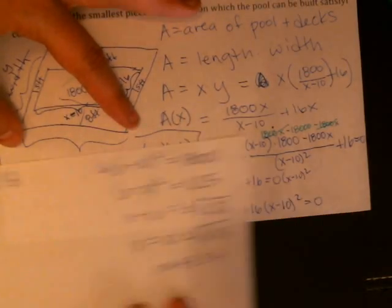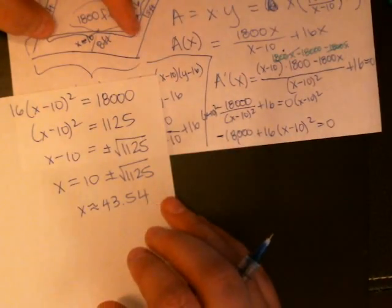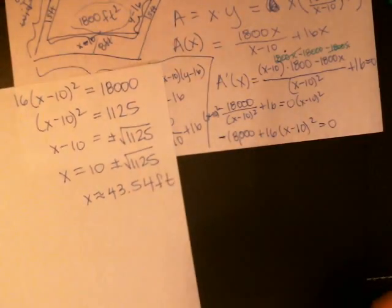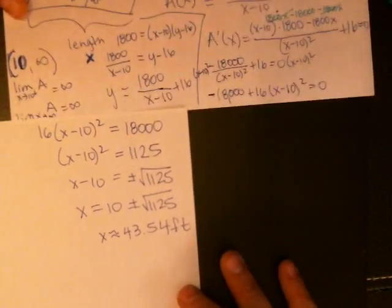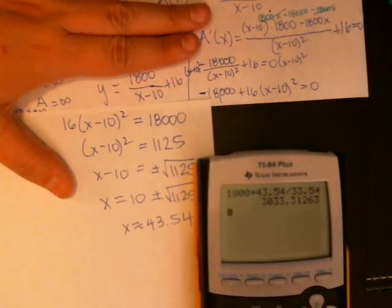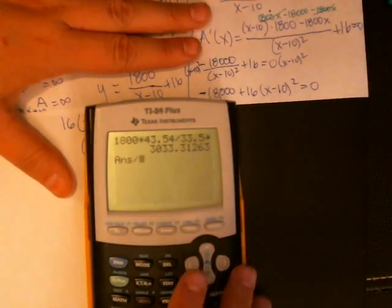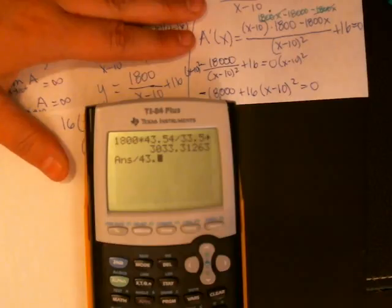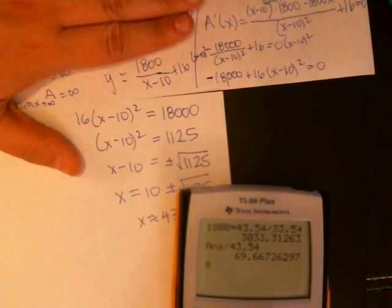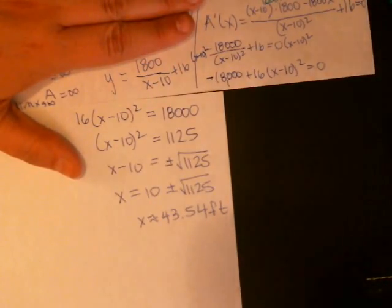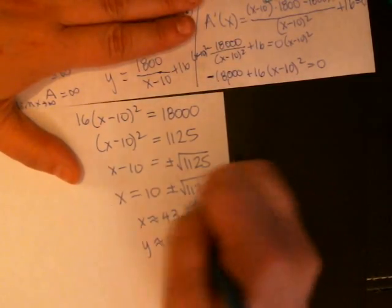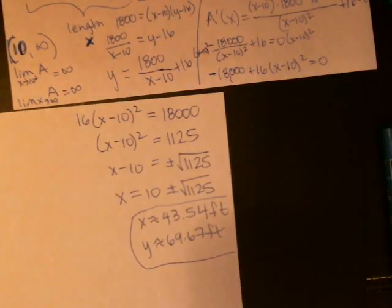Which means the smallest piece of property. So the property has 43.54 feet this direction. To get y, we're going to have to go back to this little formula right here. So I'm going to take, or actually, how about this? There's my area. I could divide my area by my 43.54. And that's another way to do it. Otherwise, use this formula right here. Y equals, so 69.67. And there's my answer now.